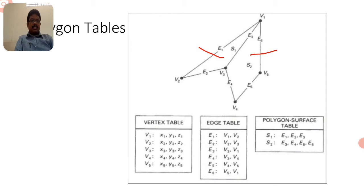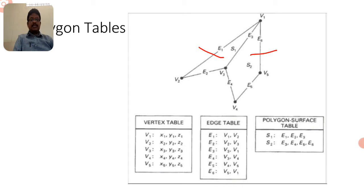The vertex table contains the coordinates of each vertex. In 3D, coordinates are X, Y, Z. Vertex V1 corresponds to coordinates (X1, Y1, Z1), V2 to (X2, Y2, Z2), V3 to (X3, Y3, Z3), V4 to (X4, Y4, Z4), and V5 to (X5, Y5, Z5). All vertices belong to their respective coordinates, and we prepare the vertex table accordingly.